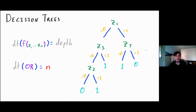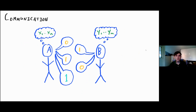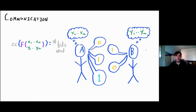Our decision tree complexity is the depth of the decision tree — the minimum depth of any decision tree computing f. This is a weak model. The most that the depth will ever be is n, because it most will have to query all the input bits. Even for the OR function you can get depth n. This is a model that really can't compute very strong functions.